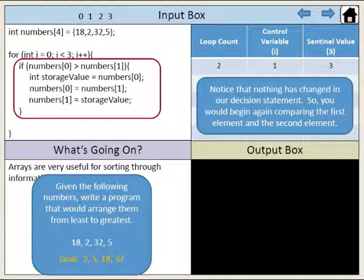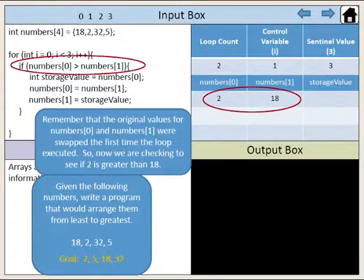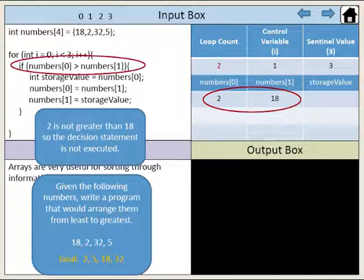Notice that nothing has changed in our decision statement, so you would begin again comparing the first element and the second element. Remember that the original values for the first element and the second element were swapped the first time the loop executed. So now we are checking to see if 2 is greater than 18. Two is not greater than 18, so the decision statement is not executed.